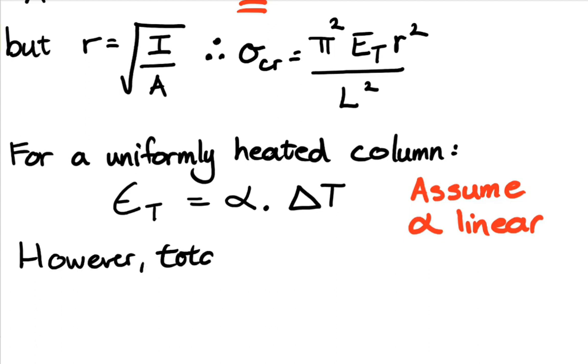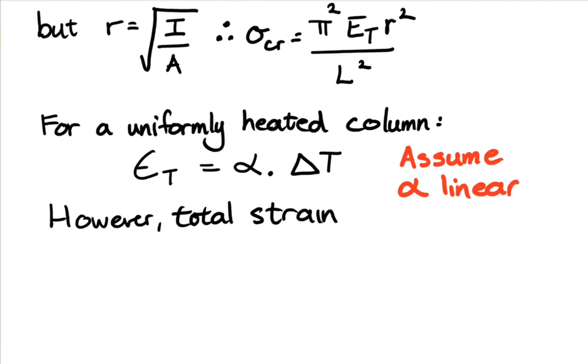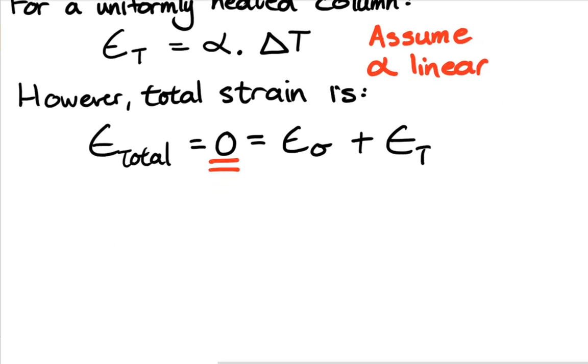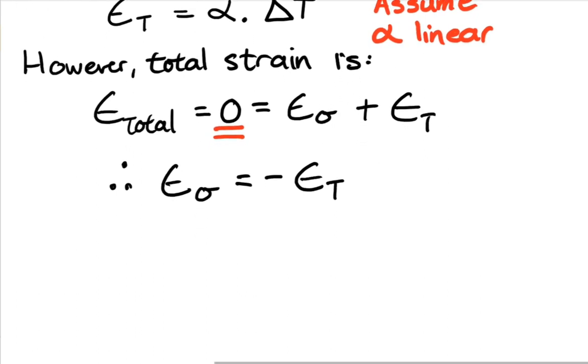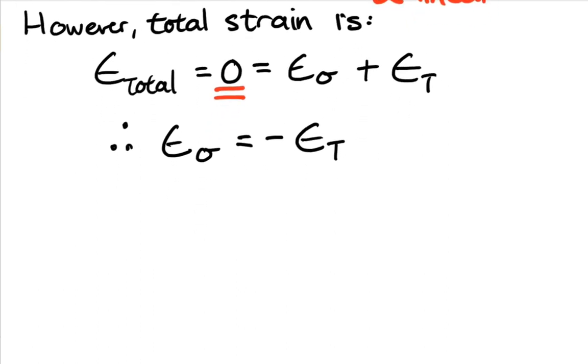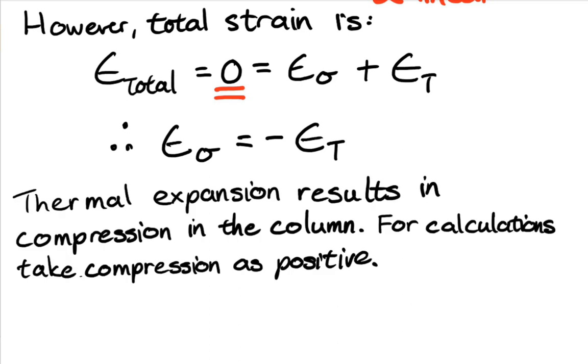However, total strain is our total strain is always the summation of our stress induced strain, or the stress in our section, plus the thermal strain. And this is equal to zero. Our strain is zero because it hasn't gone anywhere. There are zero movements at the end. So total strain is zero, thus meaning that our stress induced strain or mechanical strain is just the inverse of our thermal strain temperature T. And that makes sense. As it's heated up it'll try to expand. It can't. So instead of expanding we induce compressive stresses in our section. So thermal expansion results in compression in the column. For calculations take compression as positive.